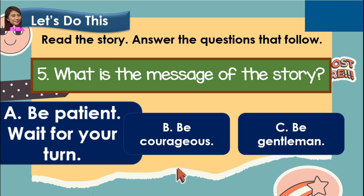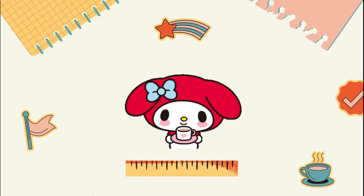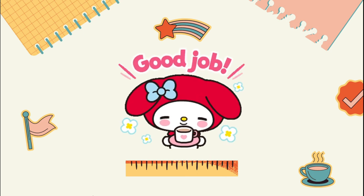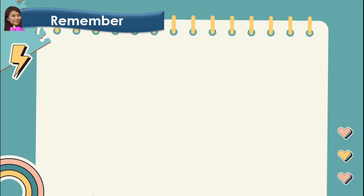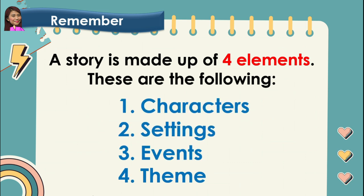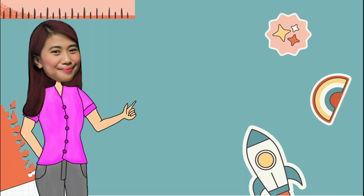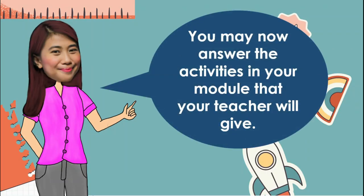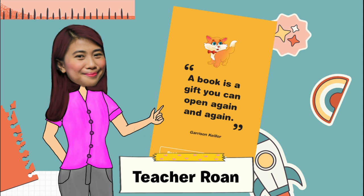Good job, kids. You really did well today. Always remember, a story is made up of four elements: characters, settings, events, and theme. You may now answer the activities in your module that your teacher will give. Again, I am Teacher Roan, and here's our quote of the day by Garrison Keillor: 'A book is a gift you can open again and again.' Till our next lesson, kids. Goodbye!